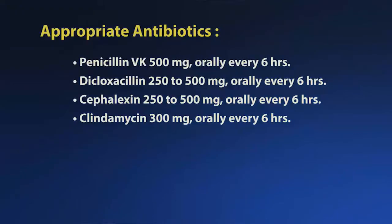Antibiotics for non-purulent, non-exudative cellulitis should take into consideration the most common culprit organisms, which include beta-hemolytic streptococci and methicillin-susceptible staph aureus. Appropriate antibiotics would include penicillin VK 500 mg orally every six hours, dicloxacillin 250 to 500 mg orally every six hours, cefalexin 250 to 500 mg orally every six hours, or clindamycin 300 mg orally every six hours.